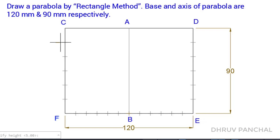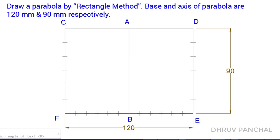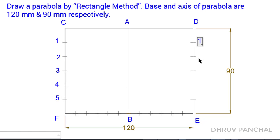Now, name the points on line CF and line BE as point 1, 2, 3, 4, and 5.